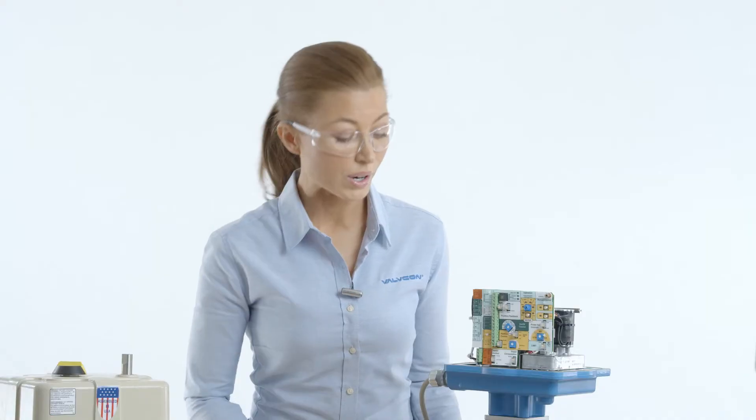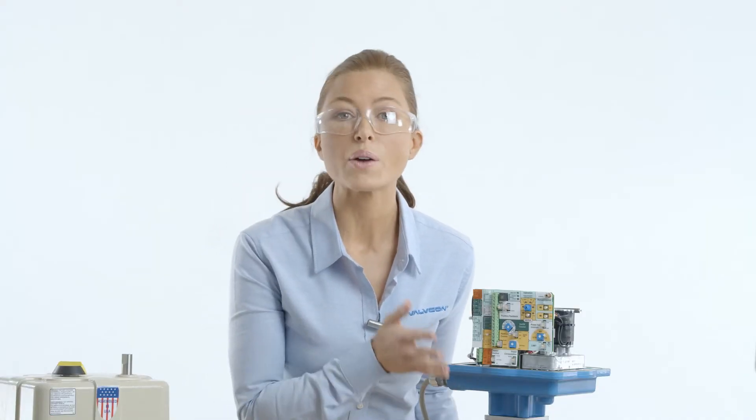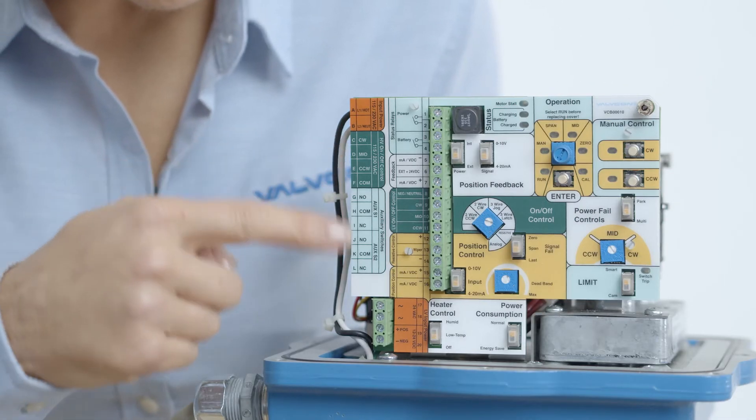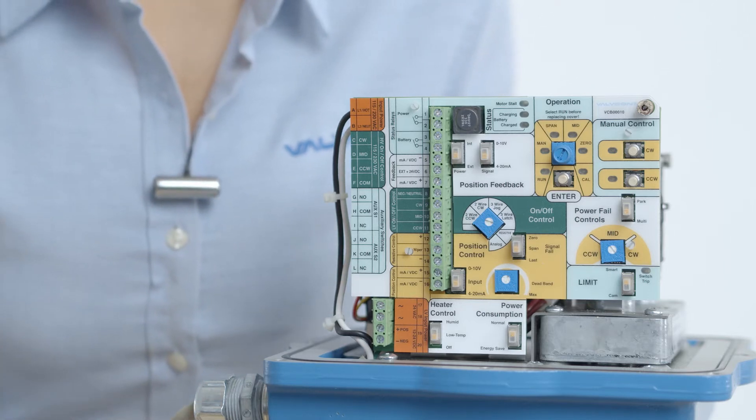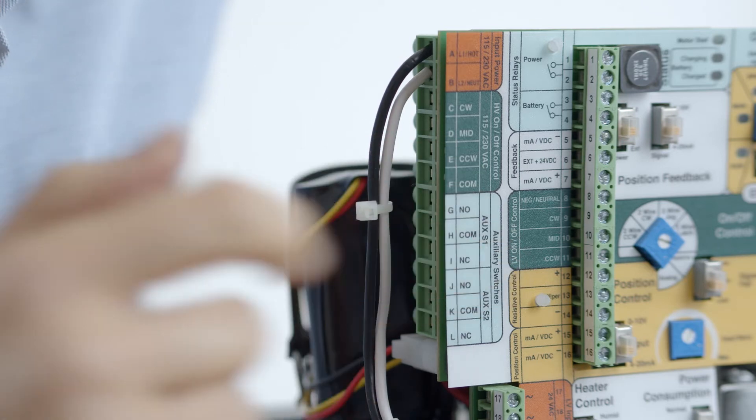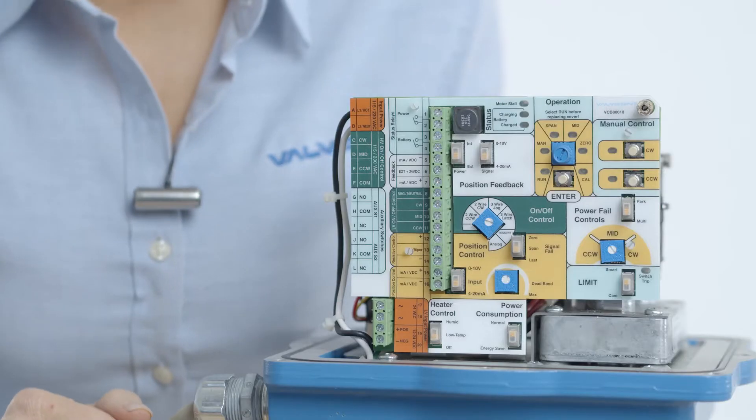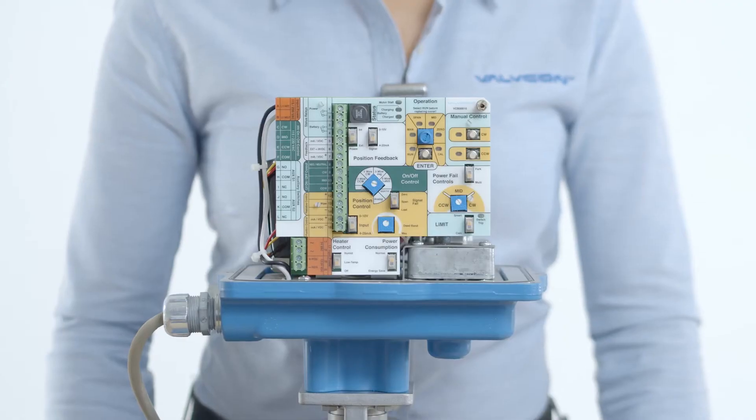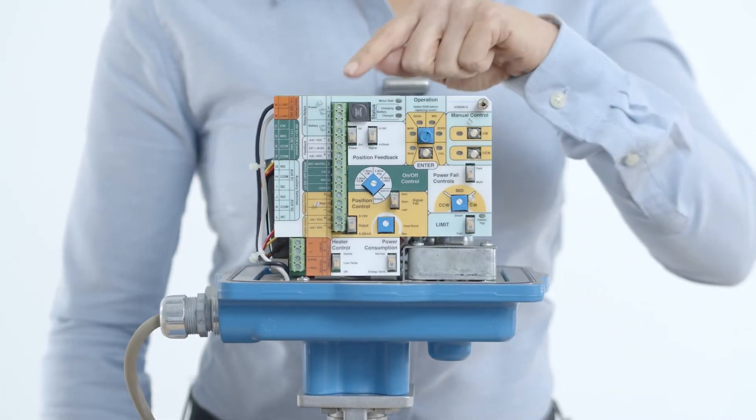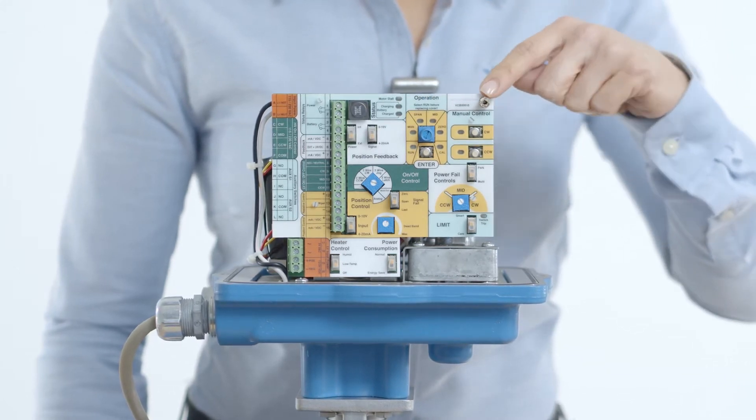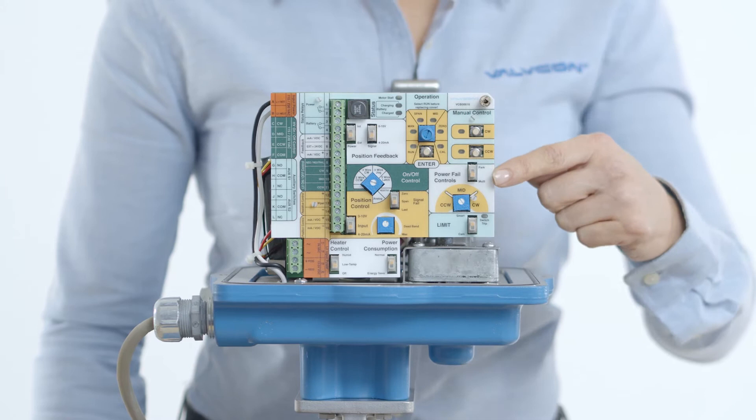The universal control board is color coded to simplify wiring and setup. The main input wiring terminals are shown here in orange. The on-off control wiring terminals are shown here in dark green. The position control section is shown here in yellow.